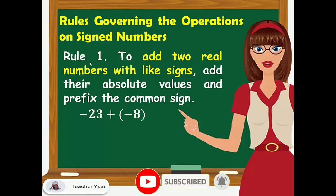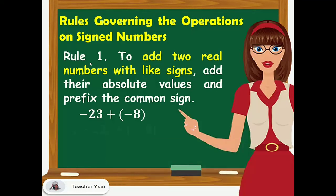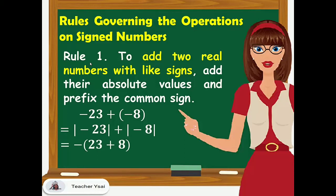Next, we have negative 23 plus negative 8. So first, we have to add their absolute values: the absolute value of negative 23 plus the absolute value of negative 8. And we have to prefix the common sign, which is the negative sign. Negative 23 plus 8 gives us negative 31.